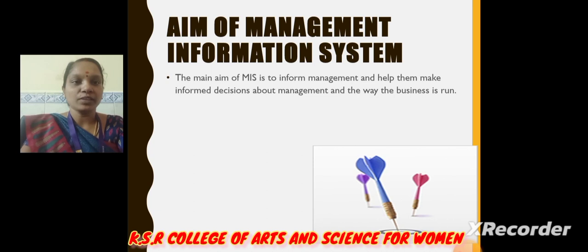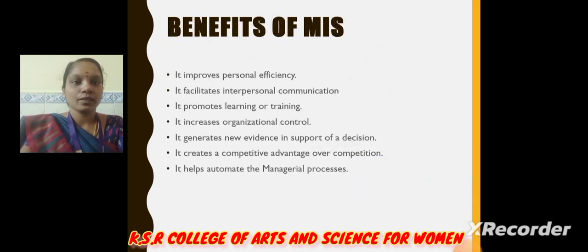The aim of management information system is to inform management and help them make informed decisions about management and the way the business is run. Benefits of MIS: It improves personal efficiency, facilitates interpersonal communication, promotes learning or training, increases organizational control, generates new evidence in support of a decision, creates a competitive advantage over competition, and helps automate the managerial processes.